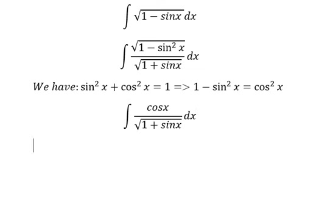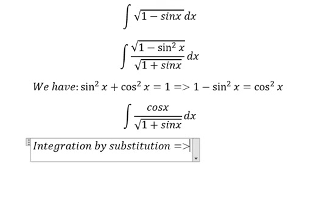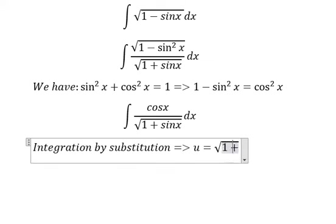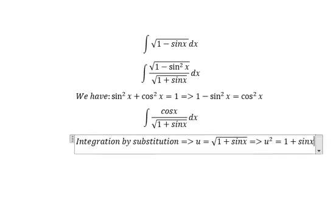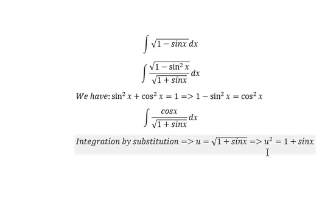Now we can do about integration by substitution. So we got about u equals to the square root of 1 plus sine x. So we put the square in the both sides. And then we do first derivative in the both sides.